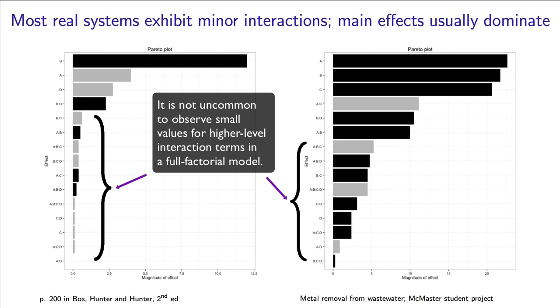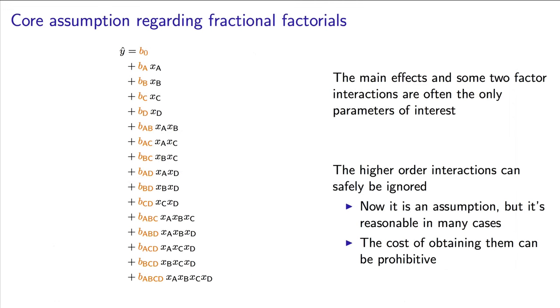By using some educated guessing and making reasonable assumptions about our system, we are going to figure out a way to do fewer experiments and still retain the essential information of the important effects in our system.